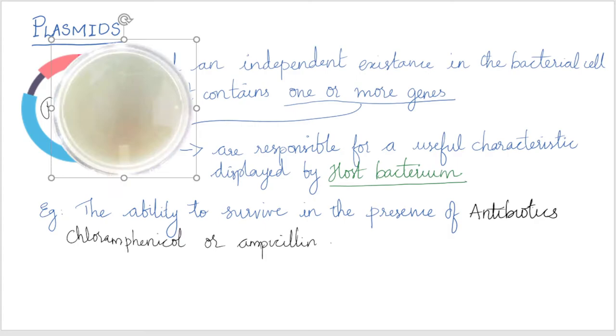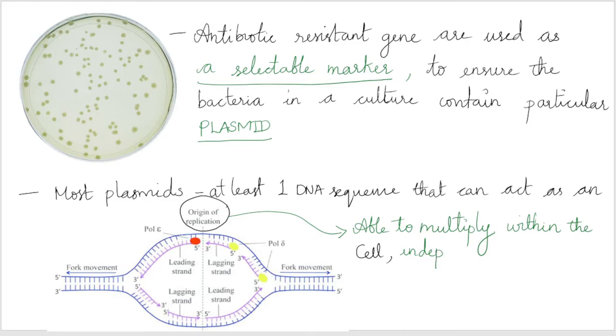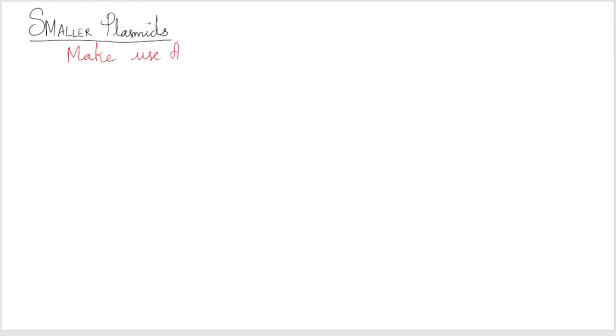In the laboratory, antibiotic resistance is often used as a selectable marker to ensure the bacteria in a culture contain a particular plasmid. Most plasmids possess at least one DNA sequence that can act as an origin of replication, so they are able to multiply within the cell independently of the main bacterial chromosome.